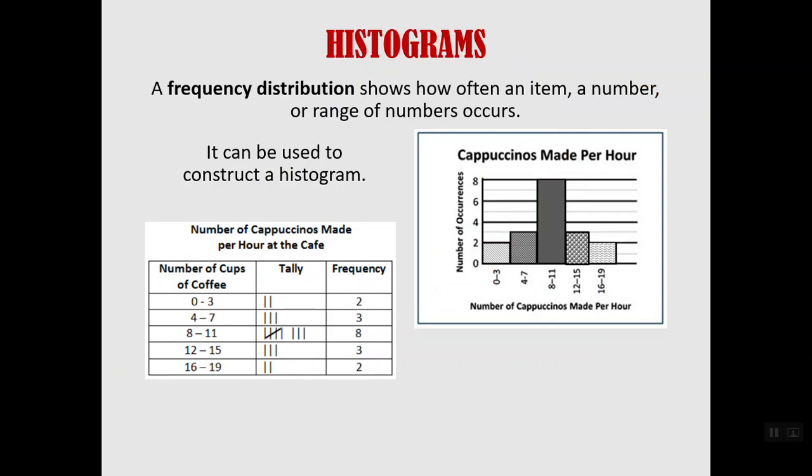It says number of cups of coffee, but it really should say cappuccino. So if in an hour they made only zero to three cups of cappuccino, they made a little tally and you can see that happened twice. And in an hour if there were between four and seven cups of cappuccino made, they made more tick marks. That's their tally and that happened three times. So you can see the entire table shows the tally and frequency for each of those ranges. That can be used to construct a histogram.